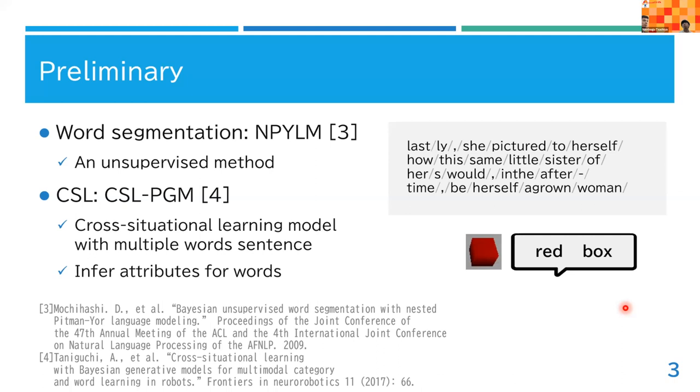When this method receives sensory information and words, it can infer word meanings and their sensory categories. For example, red is the word of color attributes and more specifically, this word is linked to reddish objects.